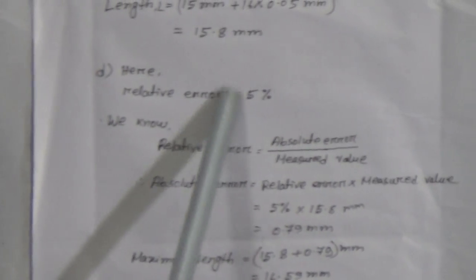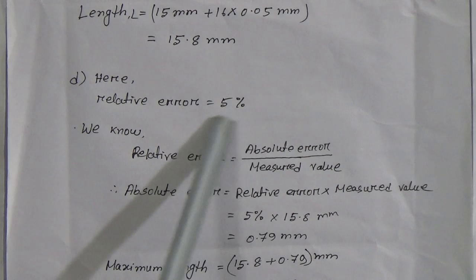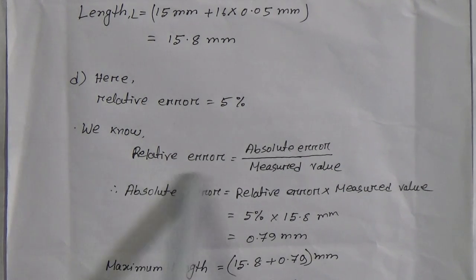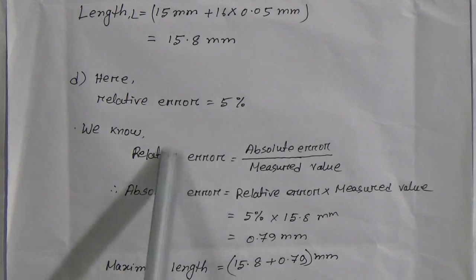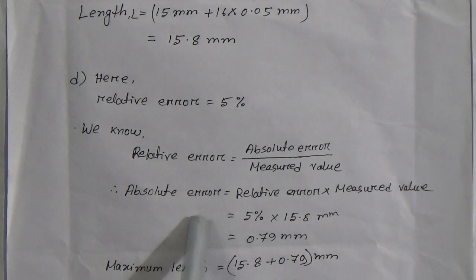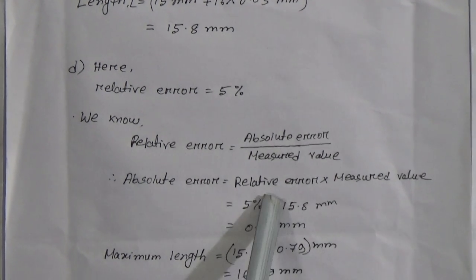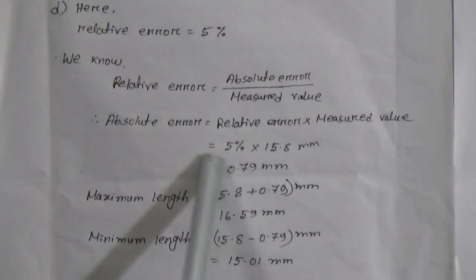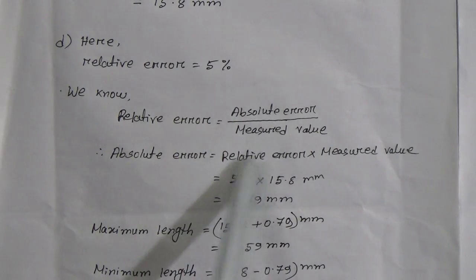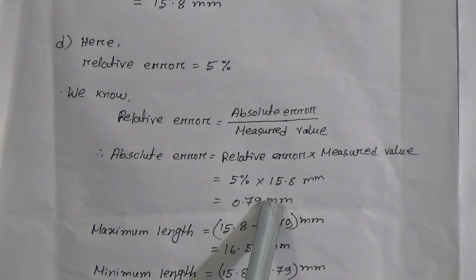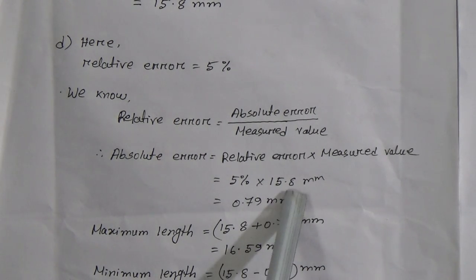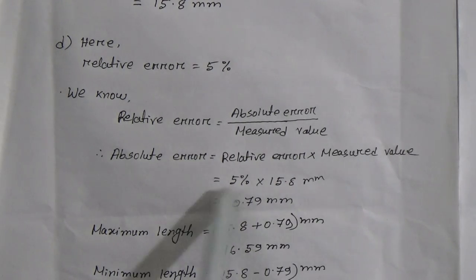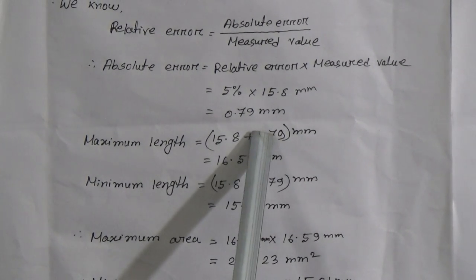The given value: relative error equals 5%. We know the formula: relative error equals absolute error divided by measured value. By cross multiplication, absolute error equals relative error multiplied by measured value. Putting relative error as 5% and measured value as 15.8 millimeter (obtained from part C), after calculating we get absolute error equal to 0.79 millimeter.